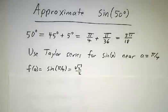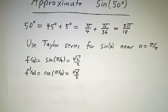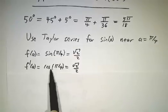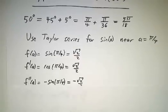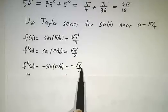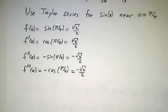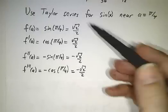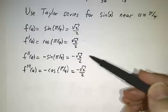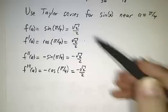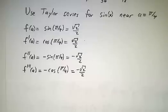So we need the value of the function at pi over 4. That's root 2 over 2. The value of the derivative, well, derivative of sine is cosine. Still root 2 over 2. Derivative of that is minus sine. Now we got minus root 2 over 2. Derivative of that is minus cosine, minus root 2 over 2, and the process repeats. The next derivative is going to be root 2 over 2. Then root 2 over 2. Then minus root 2 over 2. Then minus root 2 over 2. Then root 2 over 2. Then root 2 over 2. You get the idea.